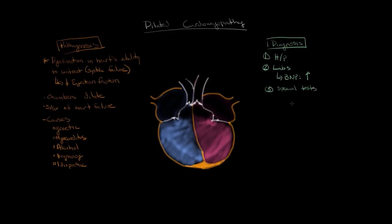For special tests, the first is an EKG. In dilated cardiomyopathy, the EKG is almost always abnormal, but the findings are nonspecific. An abnormal EKG doesn't confirm dilated cardiomyopathy, but a normal EKG will almost rule out the disease. The next test is a chest X-ray, which will show cardiomegaly — an enlarged heart. It makes sense that if the heart is dilated in dilated cardiomyopathy, you'll see a big heart on the chest X-ray.